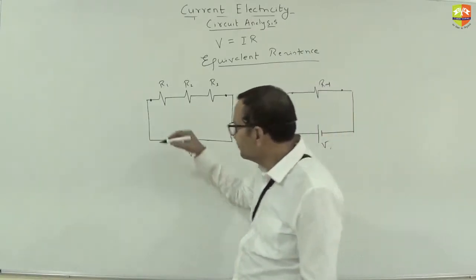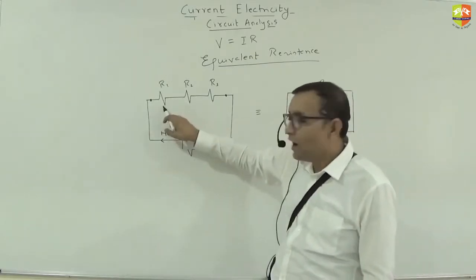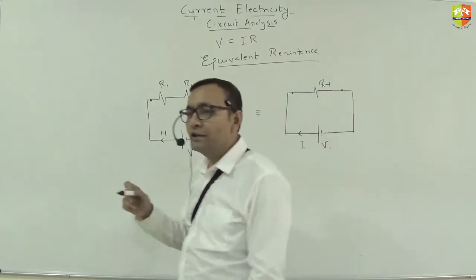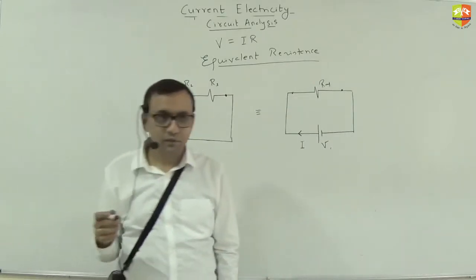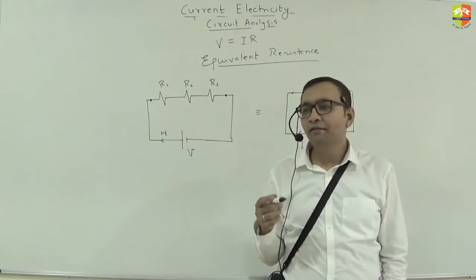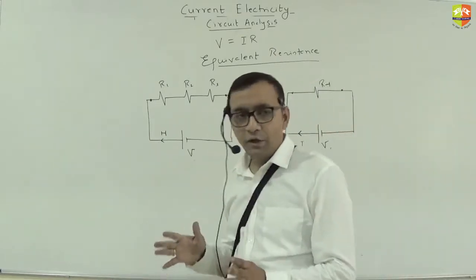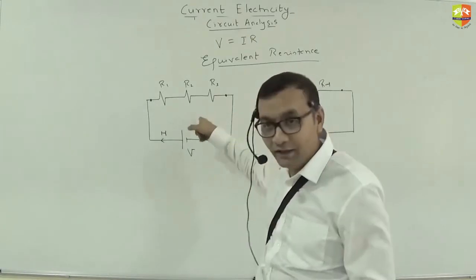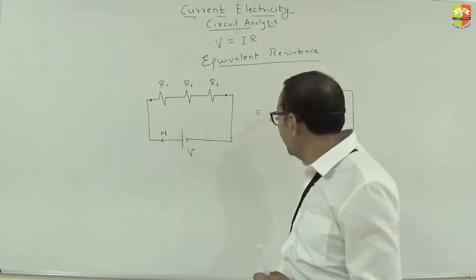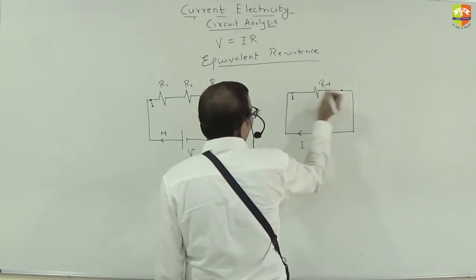If the current entering is I, the current through R1, R2, and R3 is also I each. In a series connection, all resistances carry the same current. If this is point 1 and that is point 2, the potential at point 1 is the same on both sides, and similarly for point 2. So the potential difference across R_equivalent is V.